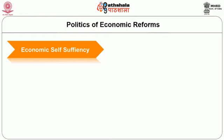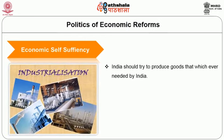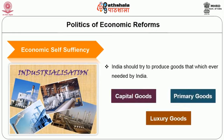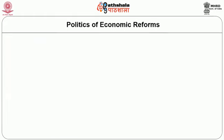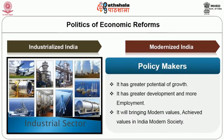There was emphasis on economic self-sufficiency and the concept of import-substituting industrialization — India should produce what was needed by Indians: capital goods and primary goods, not luxurious consumer goods. The goal was to industrialize and modernize India. The industrial sector was preferred because policymakers believed it had greater potential for growth and would bring greater development.